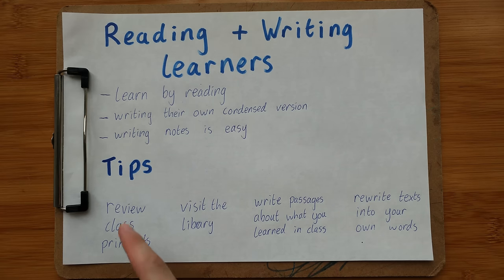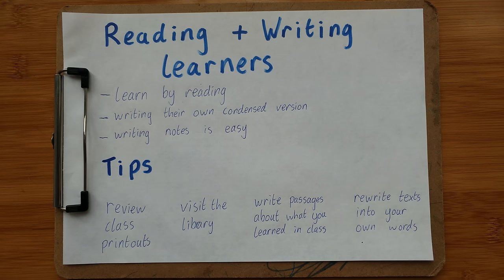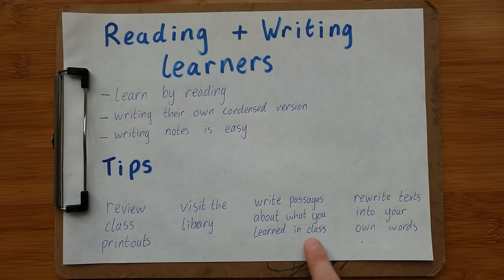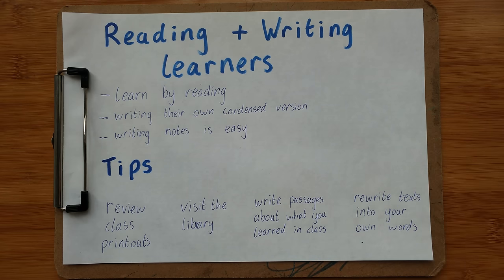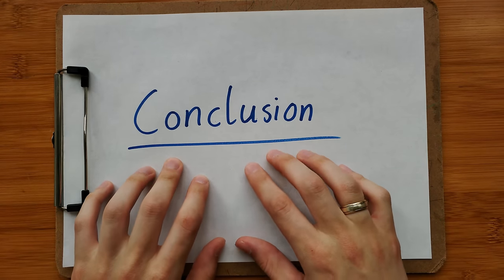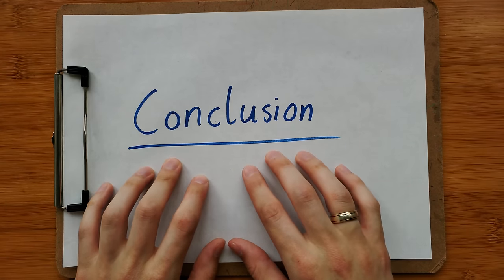Some tips for reading and writing learners: if your class has printouts, spend time reviewing the printout the teacher gave you. You could also visit the library and find books about your subject. Since reading and writing learners prefer books, you could write a passage about what you learned in class at the end of the lesson to review, or rewrite texts into your own words.